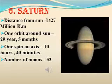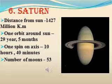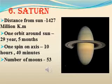Saturn is the most beautiful planet of our Solar System. Its distance from the Sun is 1,427 million km. One orbit around the Sun is 29 years and 5 months. One spin on axis takes 10 hours and 40 minutes. It has 53 moons.